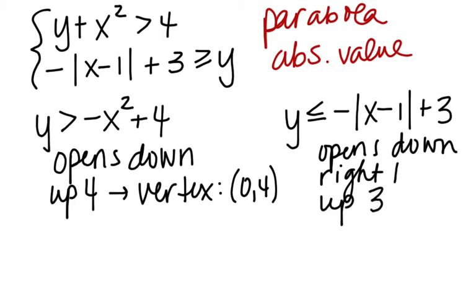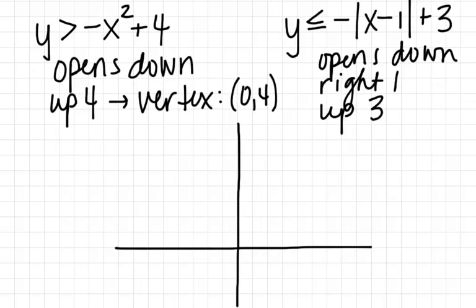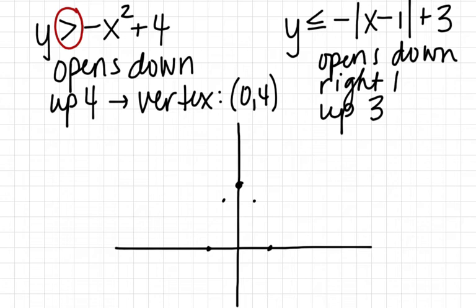Now we'll take this information and plot both curves — you can see there's a lot of review embedded in a problem like this. When graphing a system of inequalities, you want to use graph paper to be accurate with coordinates. Starting with the parabola: the vertex is at (0, 4), it opens down, and there's no vertical stretch or compression. Because the inequality is strictly greater than (not ≥), the parabola is graphed as a dotted curve.